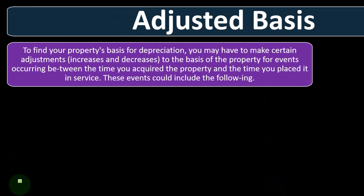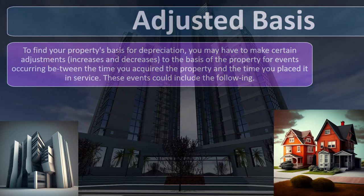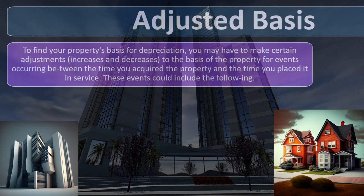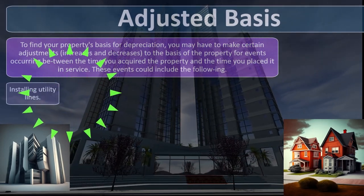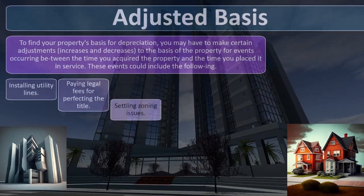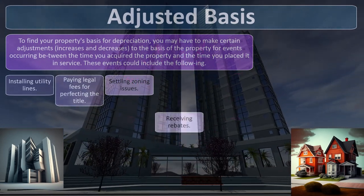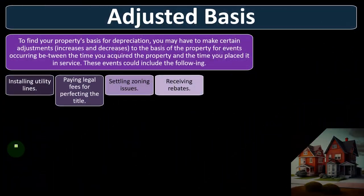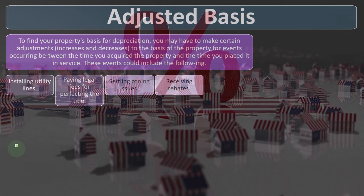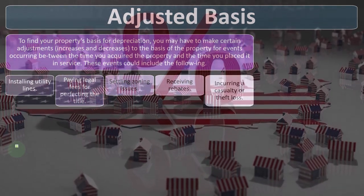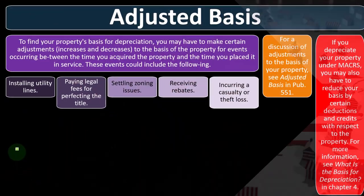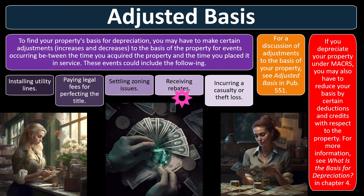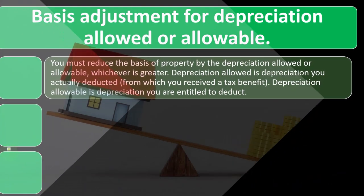Adjusted basis: to find your property's basis for depreciation, you may have to make certain adjustments — increases or decreases — for events occurring between the time you acquired the property and the time you placed it in service. These events could include installing utility lines, paying legal fees for perfecting the title, settling zoning issues, receiving rebates, or incurring a casualty or theft loss. See adjusted basis in Publication 551 for a full discussion.